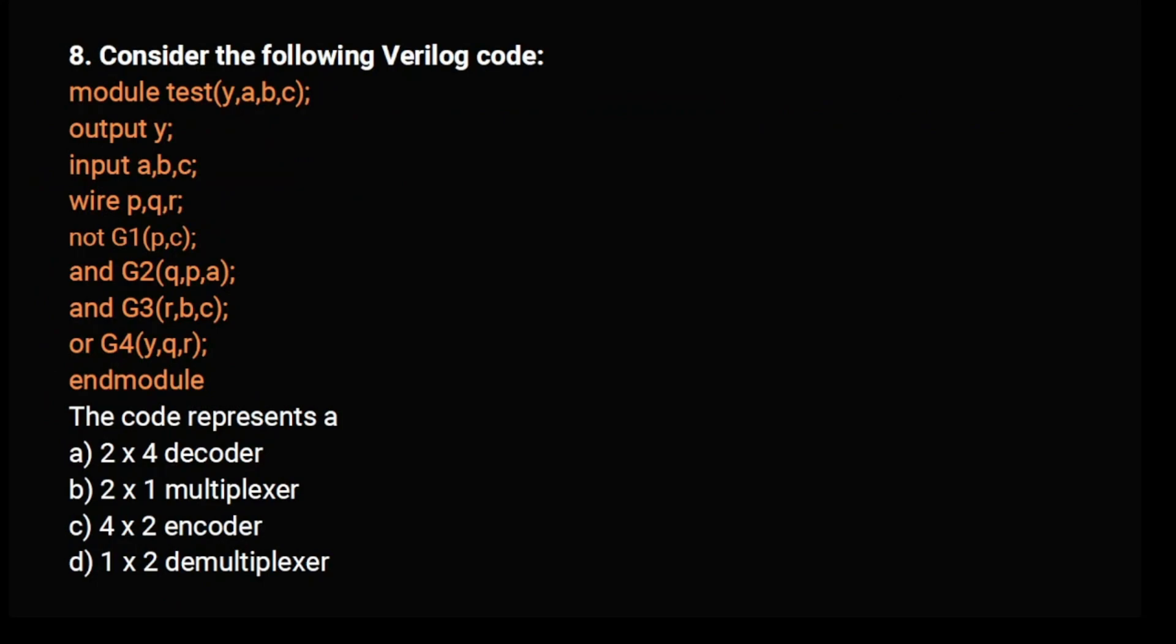Consider the following Verilog code: This code represents 2x4 decoder, 2x1 multiplexer, 4x2 encoder, or 1x2 demultiplexer? In this, A, B, C are inputs, Y is the output, and the wires are P, Q, R. There is an AND gate G1 between P and C, AND gate G2 with P and A, AND gate G3 with R, B, C, and OR gate G4 with Y, Q, R.